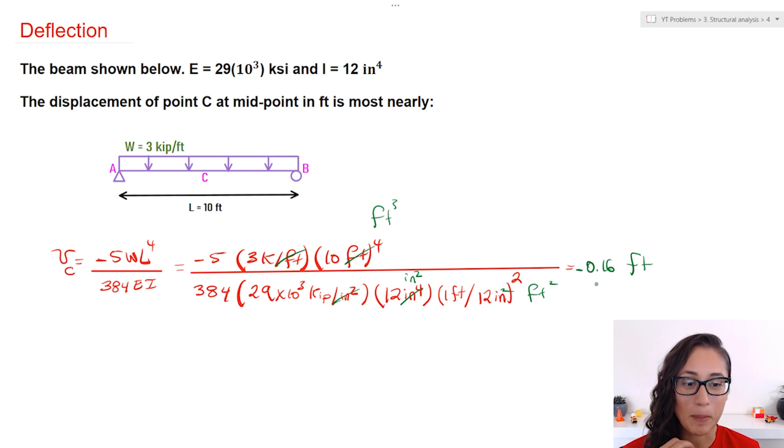If you guys plug in these numbers you're going to get minus 0.16 feet. It's minus because this beam is going to deflect this way because of the distributed load and this is the displacement or the deflection that we calculated for.